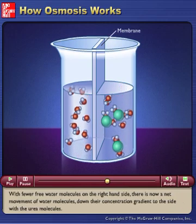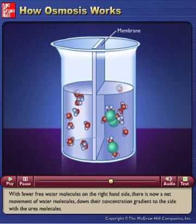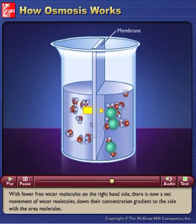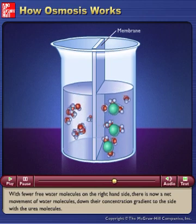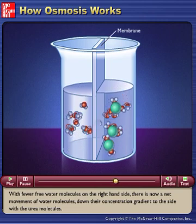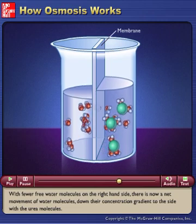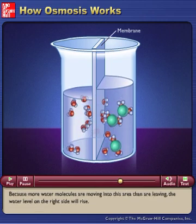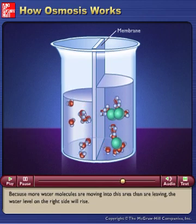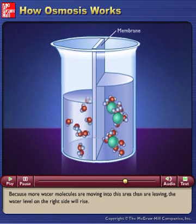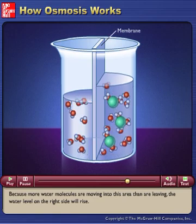With fewer free water molecules on the right-hand side, there is now a net movement of water molecules down their concentration gradient to the side with the urea molecules. Because more water molecules are moving into this area than are leaving, the water level on the right side will rise.